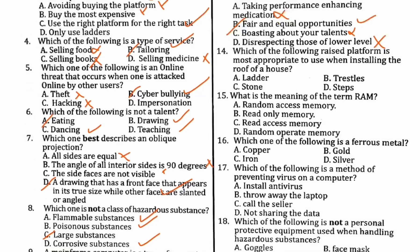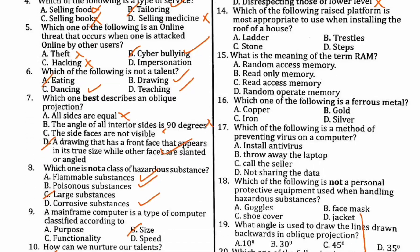Number fourteen: which raised platform is most appropriate to use when installing the roof of a house? Stone — not true. Double steps — not true, it's a bit lower. Ladder — when installing a roof, most workers use trusses. So the correct platform for installing a roof is trusses.